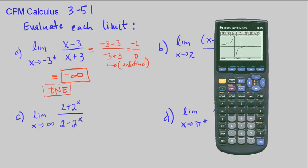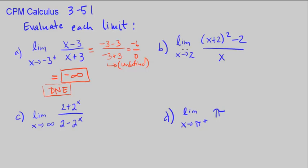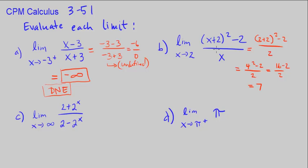Part B: we're looking at the limit as x approaches 2 of (x + 2) squared minus 2 over x. Let's first try plugging in 2: we get (2 + 2) squared minus 2 over 2. That's 4 squared minus 2 over 2, which is 16 minus 2 over 2, giving 14 over 2 = 7. That's a real number, so the limit as x approaches 2 is 7.